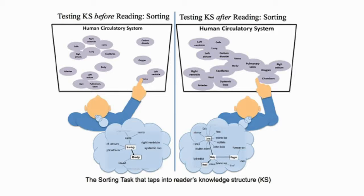I'm going to share one application: the term-sorting technology, which is very easy to use and understand. Participant readers will sort pre-selected key terms by moving related terms close in proximity and moving unrelated terms apart, depending on how closely they think these key concepts are related. By comparing these sorting patterns before and after reading, we might see if the reader has developed a new knowledge structure due to reading, how their prior knowledge structure has changed, or address other research questions using this paradigm.